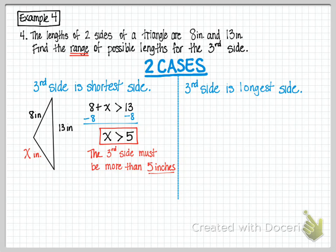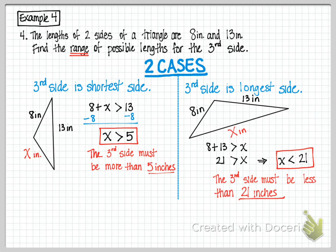But what about when that third side is the longest side? Well, here's a picture representing it as if that x is more than 8, and it's also more than 13. That would make 8 and 13 the shortest sides. So 8 plus 13 has to be greater than x. Adding those together, you get 21 is greater than x. But you should read it with the variable first, so that would be x is less than 21, x standing for the length of the side. So the third side must be less than 21 inches.